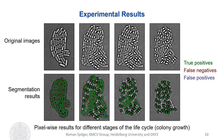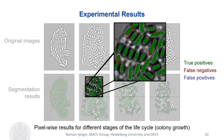Here you can see sample segmentation results of the modified U-Net with weighting for different stages of the life cycle: no endospores, mixed, and only endospores. At the top are the original images and at the bottom the segmentation results. Green marks true positive labeled pixels, red false negatives, and purple false positives. It can be seen that the images are well segmented. Here you can also see an enlargement of an image section which is difficult to segment.